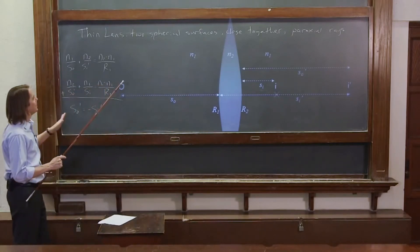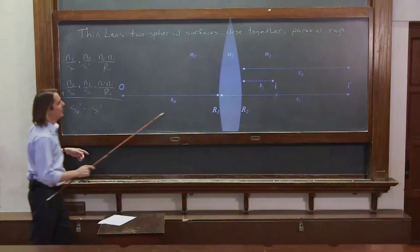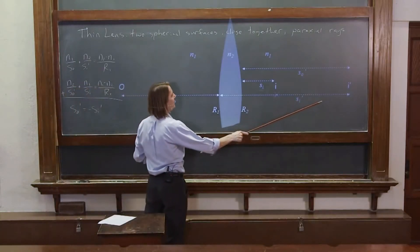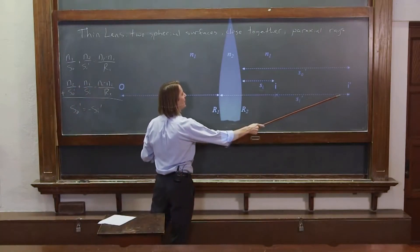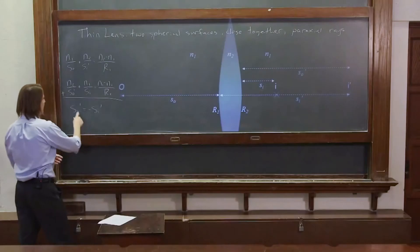But then our definitions of how we set the problems up bring in the negative sign. Okay? So this is fine. It's positive as an SI. But now that you're treating it as an object on the other side of the lens, it's on the wrong side and that's how we call it negative.